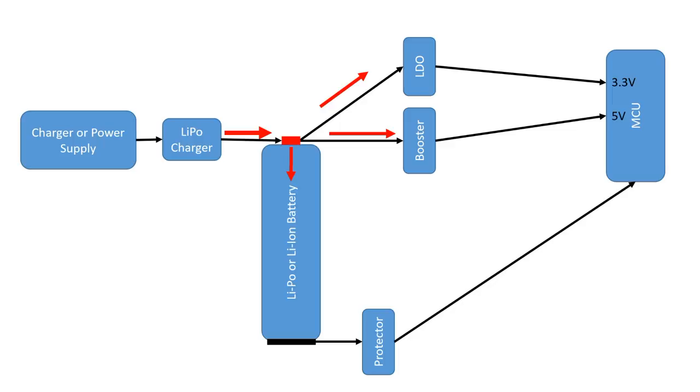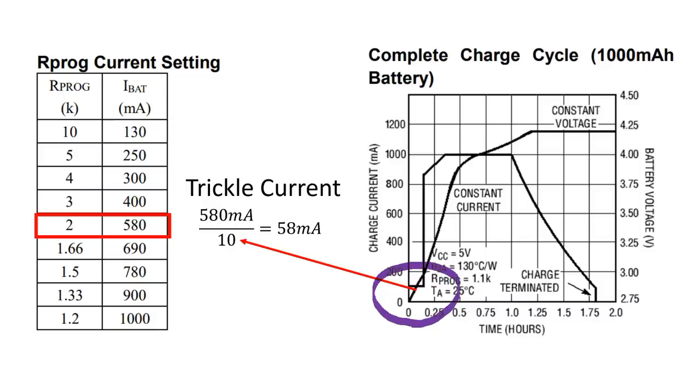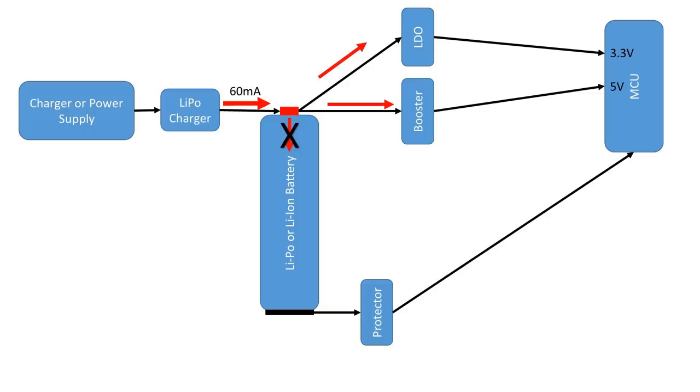Unfortunately, this is not the full truth. To protect the battery, the TP4056 reduces the charging current below 3V to about one tenth of the standard charging current. This current is called trickle current and is around 60mA. This always happens if the power outage is very long. If the load consumes more than 60mA, the battery will never be charged again. Our otherwise excellent module became utterly useless.